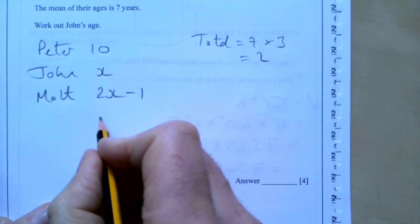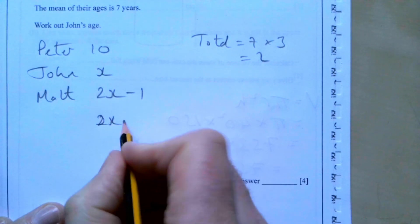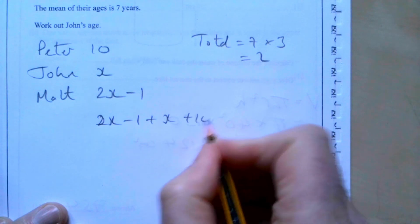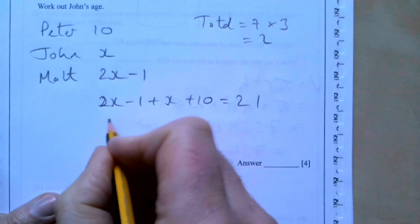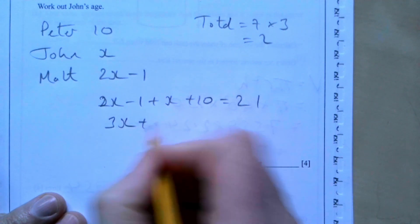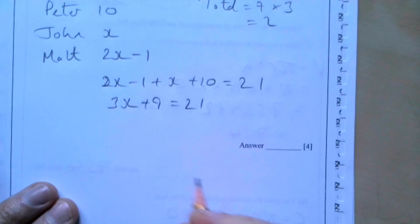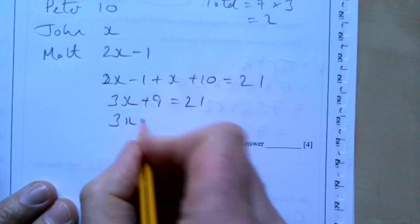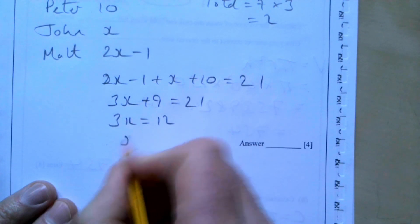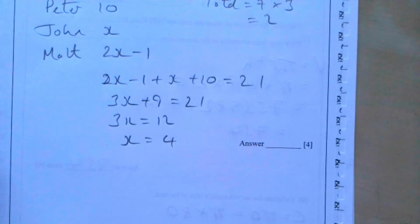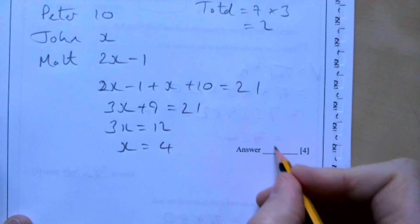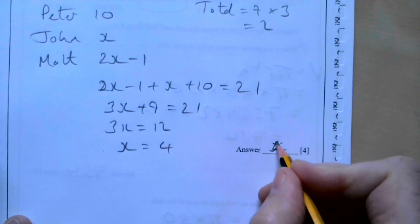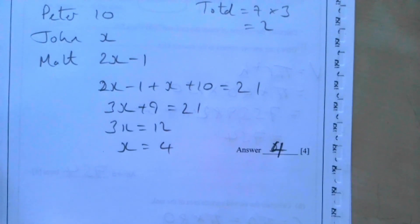Adding them together: 2x minus 1 plus x plus 10 equals 21, so 3x plus 9 equals 21, giving 3x equals 12 and x equals 4. John is 4 years old.